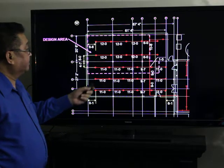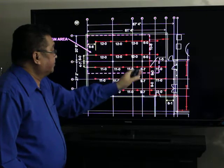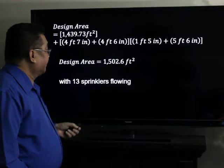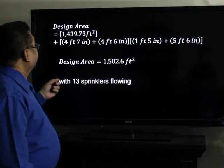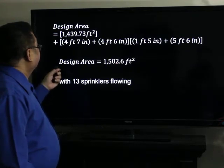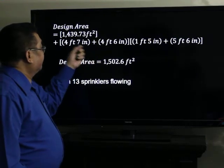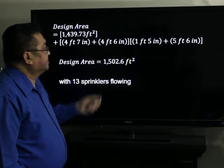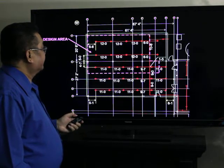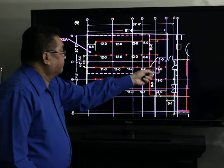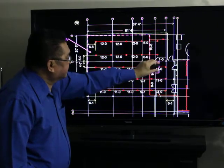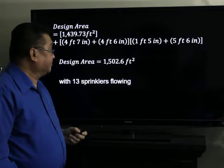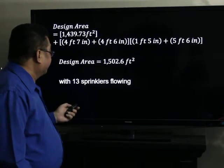The cross-main is this one here, these are the branch lines, so we add one sprinkler closest to the cross-main, this one here. Then we recalculate the area. The design area will be 1,439 square feet plus 4 feet 7 inches times 4 feet 7 inches, 4 feet 6 inches, multiplied by 1 foot 5 inches plus 5 feet 6 inches here. This distance here plus this, this times this, will be added to the area. The result will be 1,502.6 square feet.